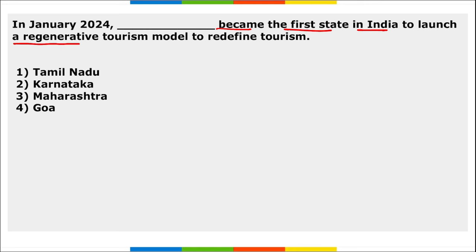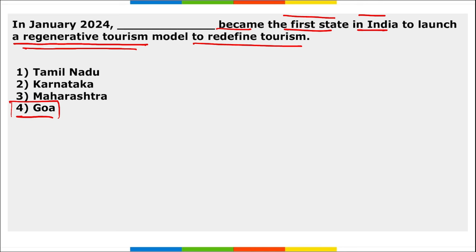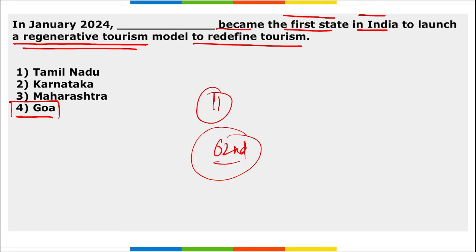Goa became the first state in India to launch a Regenerative Tourism Model to redefine tourism. This model aims to promote 11 spiritual sites under the 'Ekadasha Tirtha' campaign. The model was launched to mark the 62nd anniversary of the Liberation of Goa on 19th December 2023.